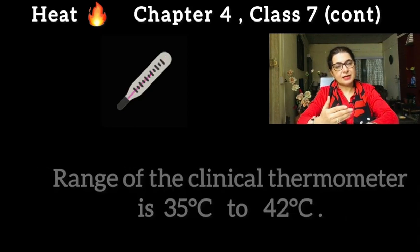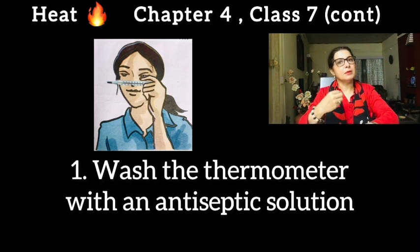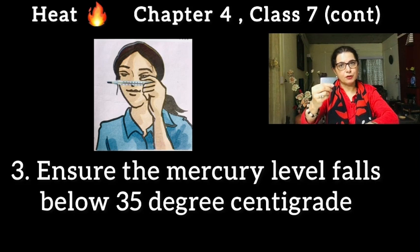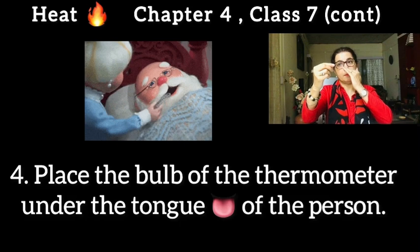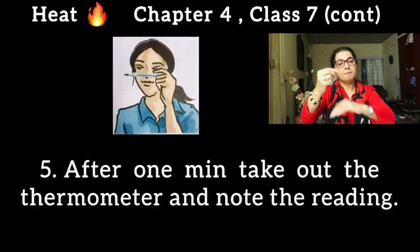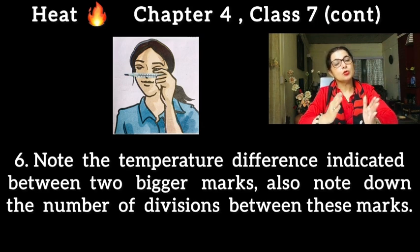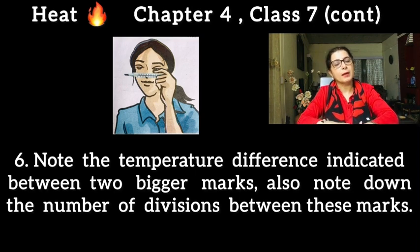Now, how do we read the clinical thermometer? First, wash the thermometer, then place it in the mouth of the patient. After one minute, take it out and read the mercury level, keeping your eye directly parallel to the markings. There are two types of markings — bigger markings and smaller markings. We need to count how many small markings fall between two big markings. For example, if there are five small markings, each marking represents 1/5 degree centigrade.